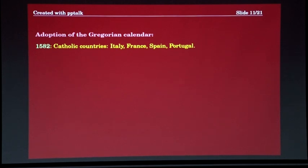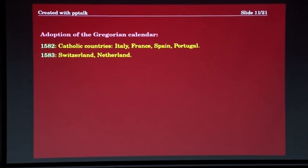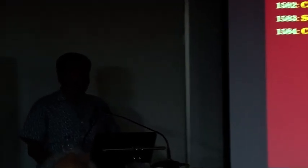Now what happened to the Gregorian calendar in 1582? The Catholic countries — Italy, France, Spain, Portugal — adopted it immediately, as they were directly under the Pope. In 1583, Switzerland and the Netherlands adopted it. In 1584, Catholic Germany. Germany was not one country then — part Catholic, part Protestant. Martin Luther had already arrived on the scene. So Catholic Germany took it, but the Protestants didn't, saying it came from the Pope. More than 100 years later, in 1700, they realized it was something universal and accepted the reform.